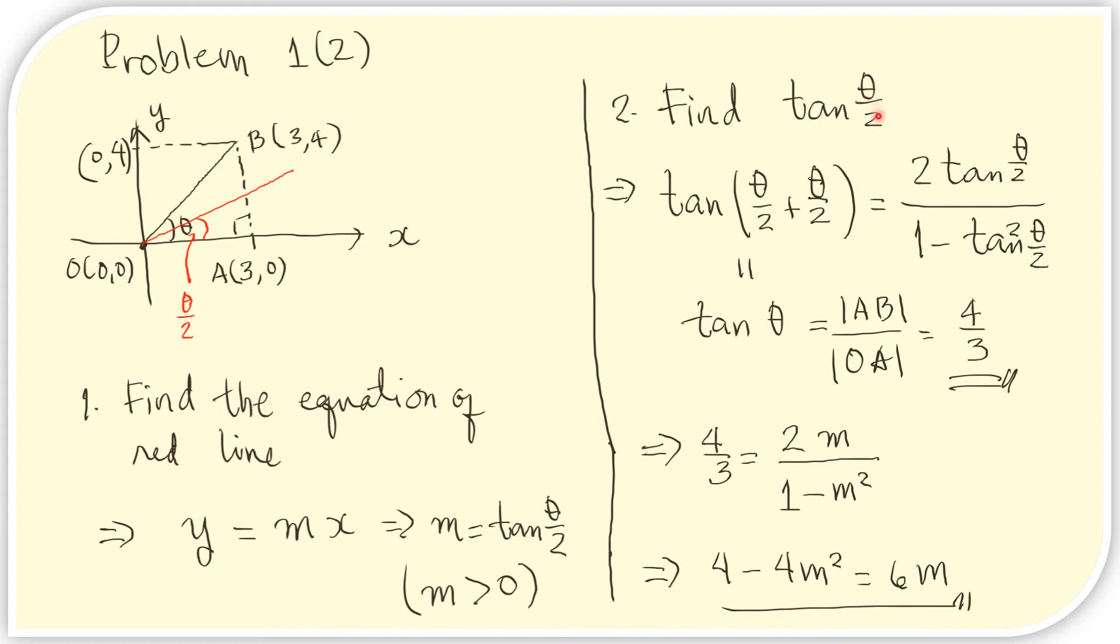To obtain the tangent of theta over 2, we use the sum of angles formula for tangent. We decompose theta into theta over 2 plus theta over 2. And if we apply the formula, this is what we obtain. For our convenience, let us denote tangent theta over 2 with m. And so we just replace this with m in here, and this with m squared. And we also replace this expression with the value of tangent theta, which is 4 thirds. So this is 4 thirds. Now, we just multiply out the denominators, so that we obtain this quadratic equation.